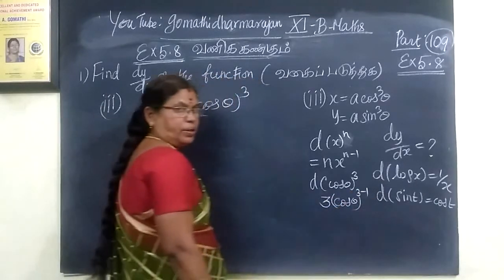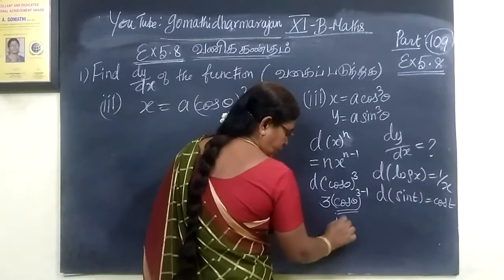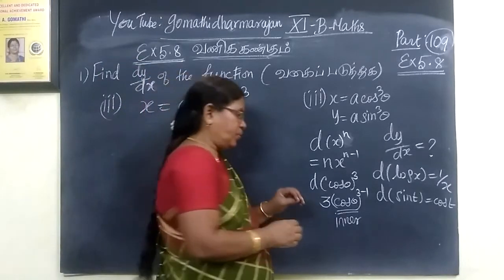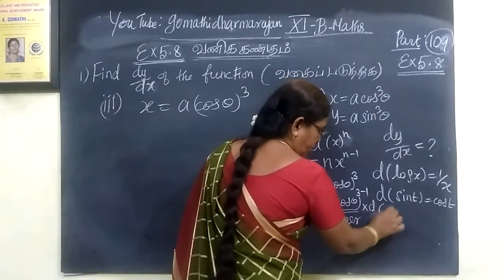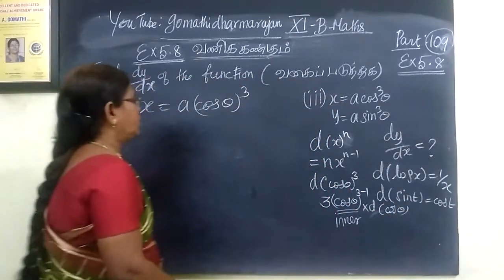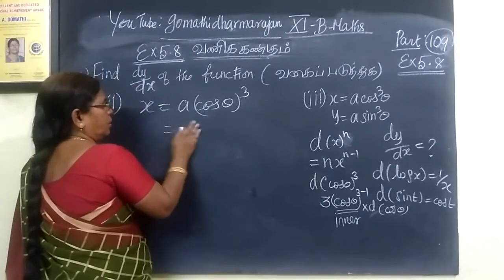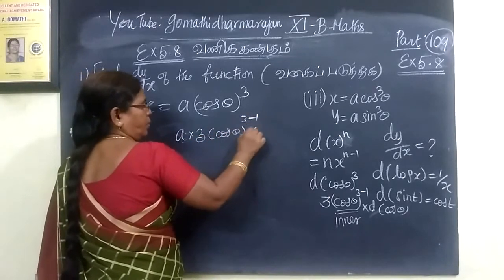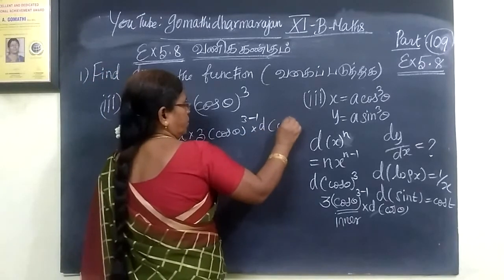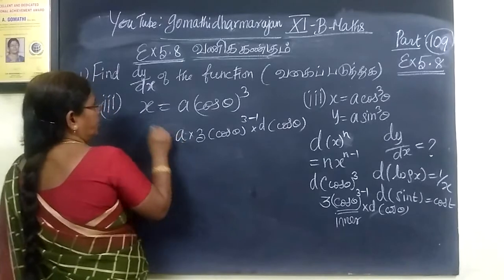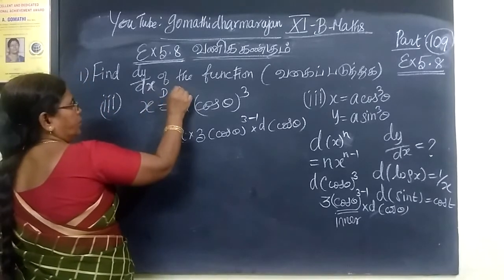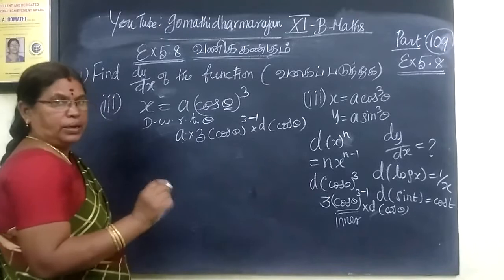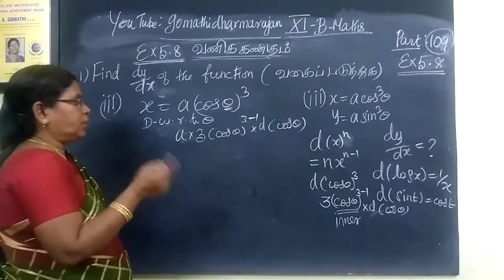This one will be n, the power is 3 minus 1. It is the inner function. So the differentiation will be 3 into d of cos cube θ. So n into x power n minus 1 into d of cos θ. Here differentiate with respect to θ. Theta is raised. Power is 3. Here is theta.